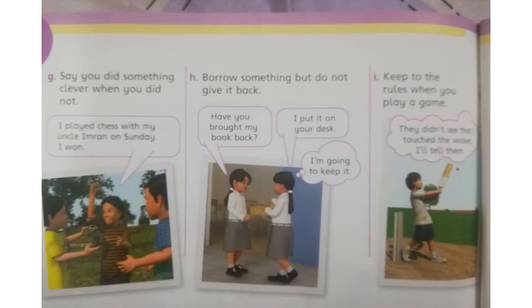Borrow something but do not give it back. The example: 'Have you brought my book back?' She says, 'I put it on your desk,' but she didn't — she is thinking she will keep it. Another example: keep to the rules when you play a game. You must follow the rules and be honest. The boy is thinking, 'They didn't see that I touched the wicket — I'll tell them.' Think about whether that boy is showing honesty or dishonesty.